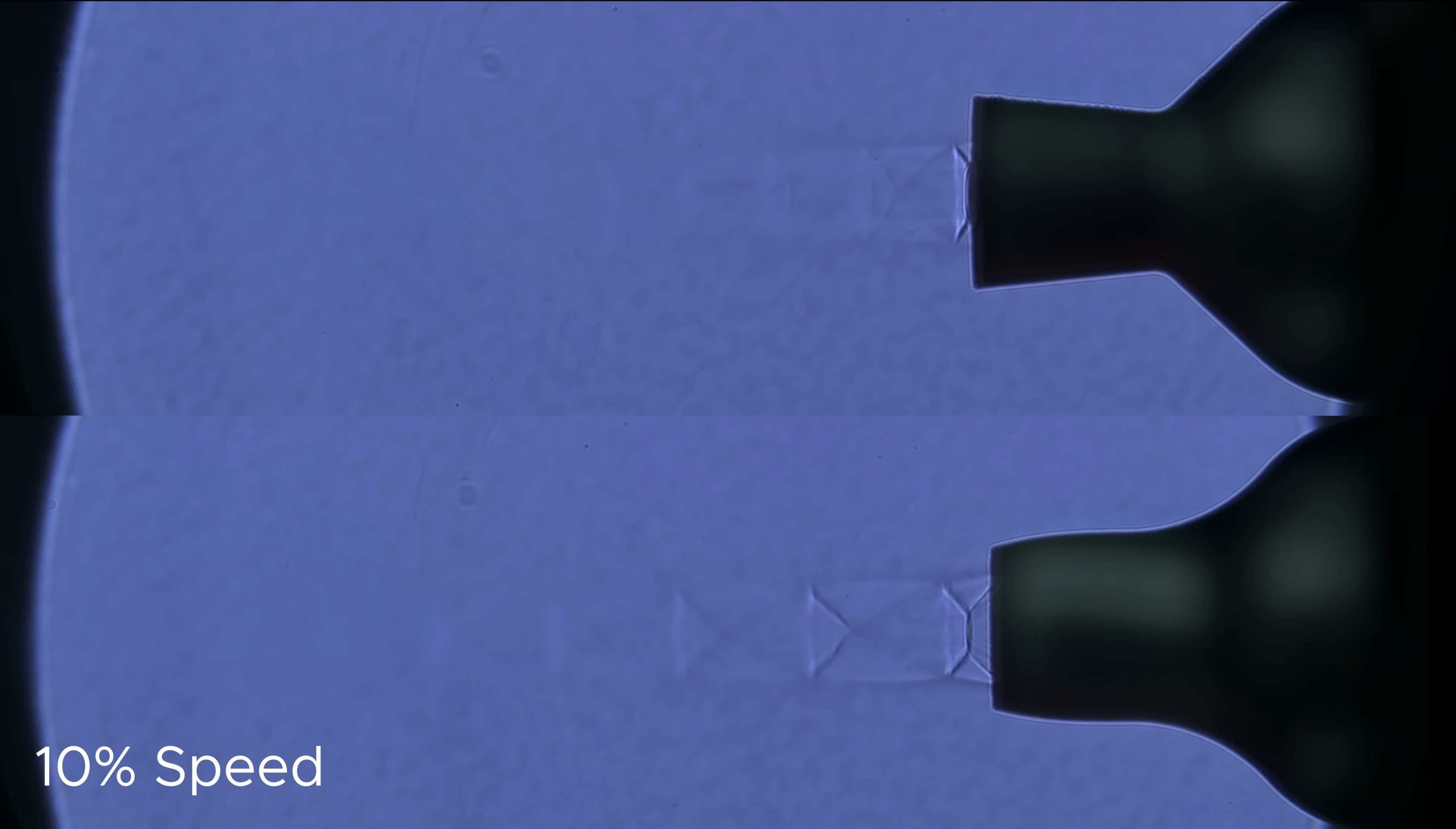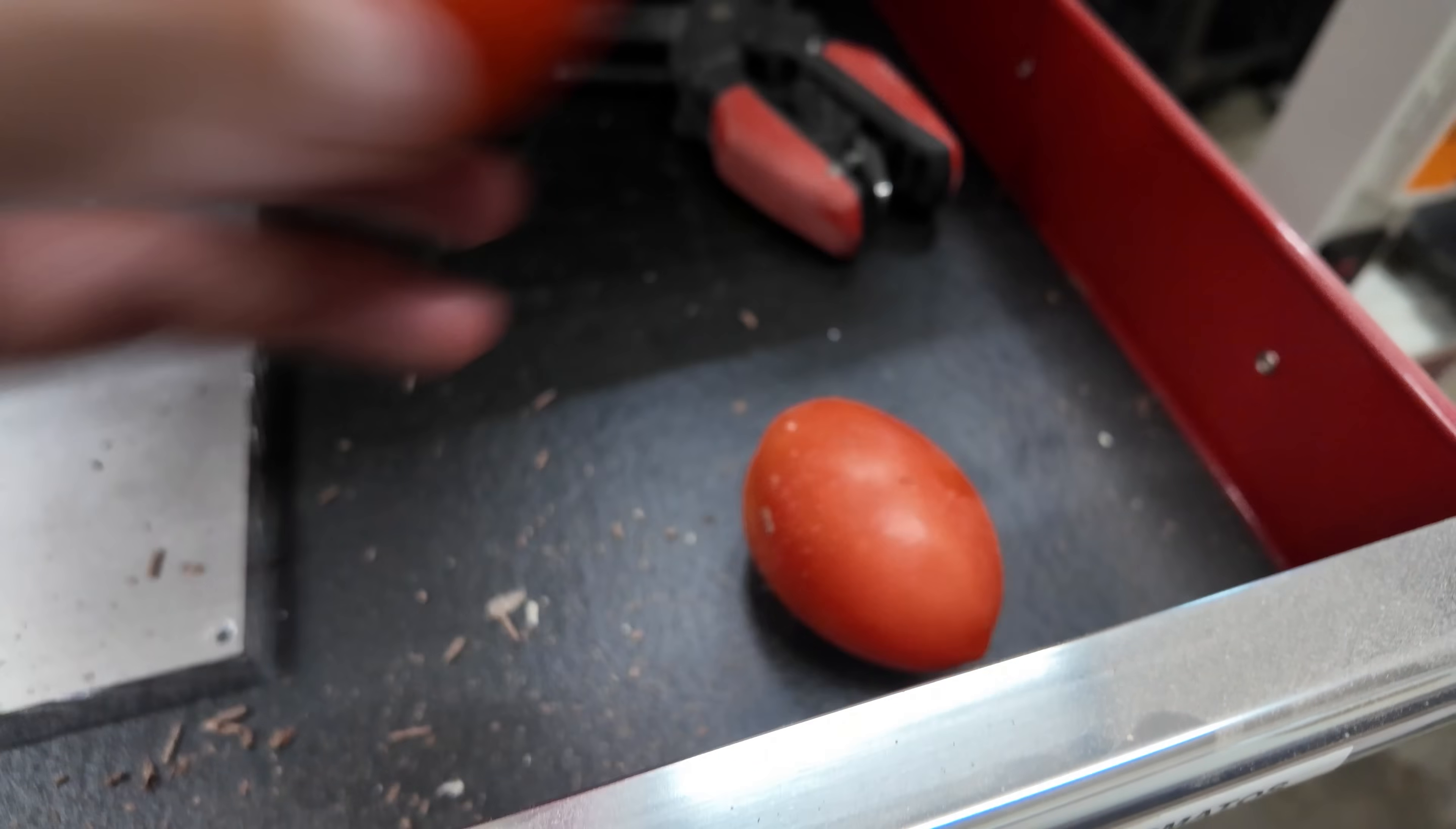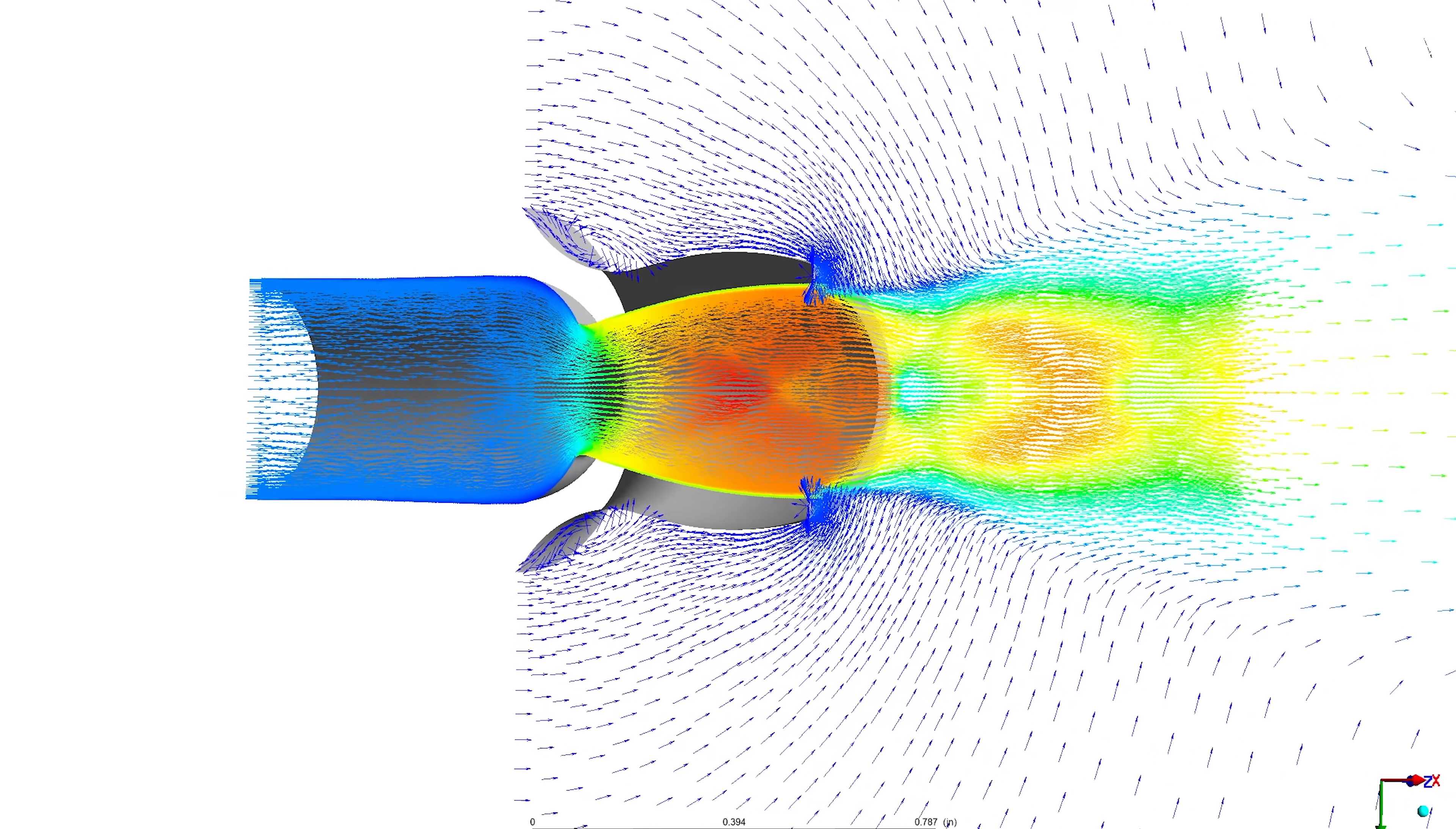Now, what I really want to test is what the supersonic flow will do to something like a tomato. But before we do that, let's talk about another way to visualize flow, and that's CFD. CFD stands for Computational Fluid Dynamics, and it's basically simulating fluid flow, but in a computer.